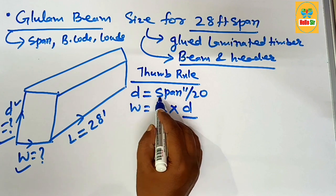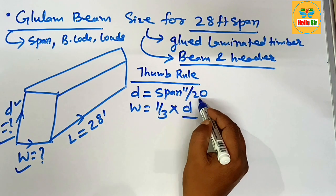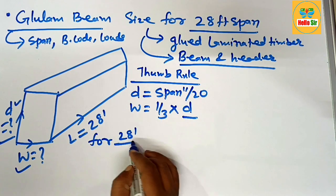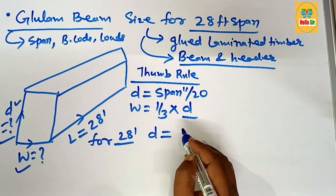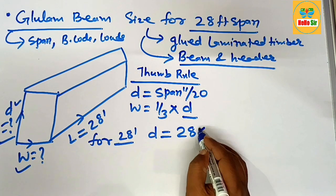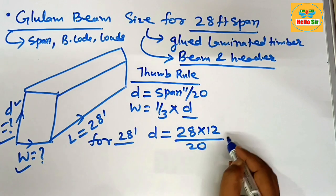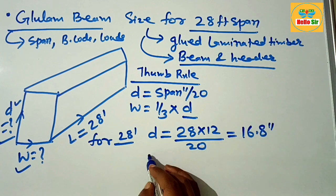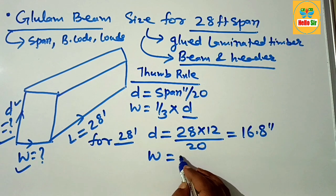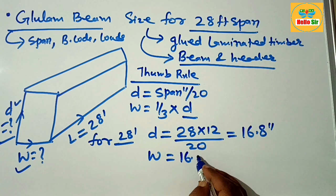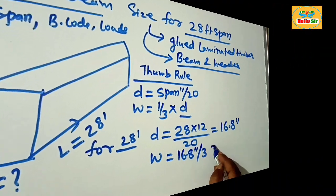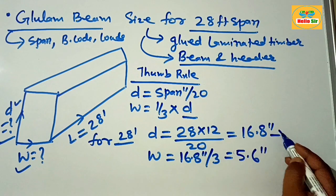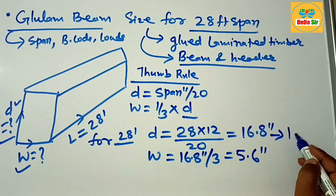For a 28-foot span, the depth equals 28 multiplied by 12 (to convert to inches), divided by 20. This gives approximately 16.8 inches. The width section of the beam is the depth divided by 3, which comes to approximately 5.6 inches.